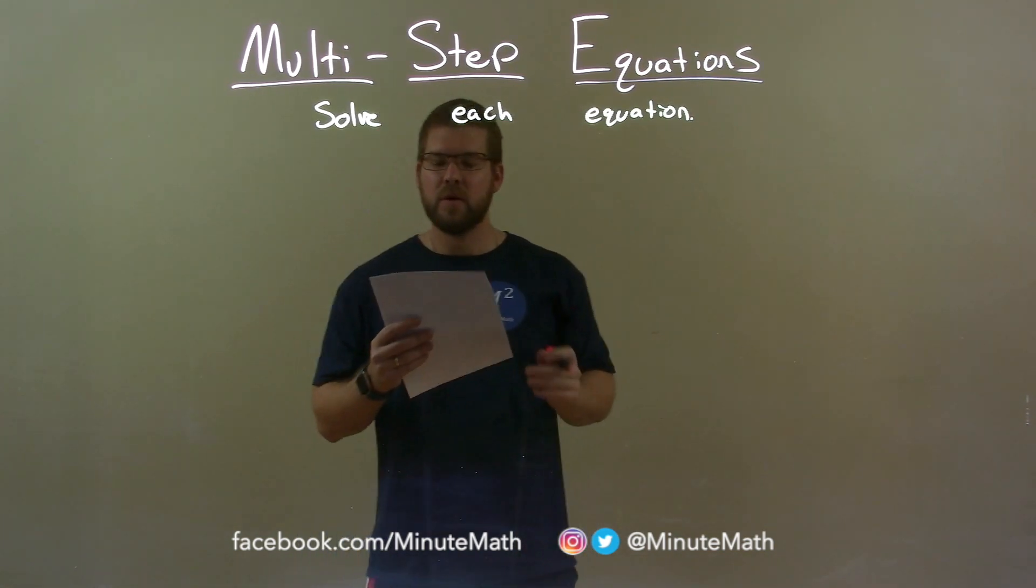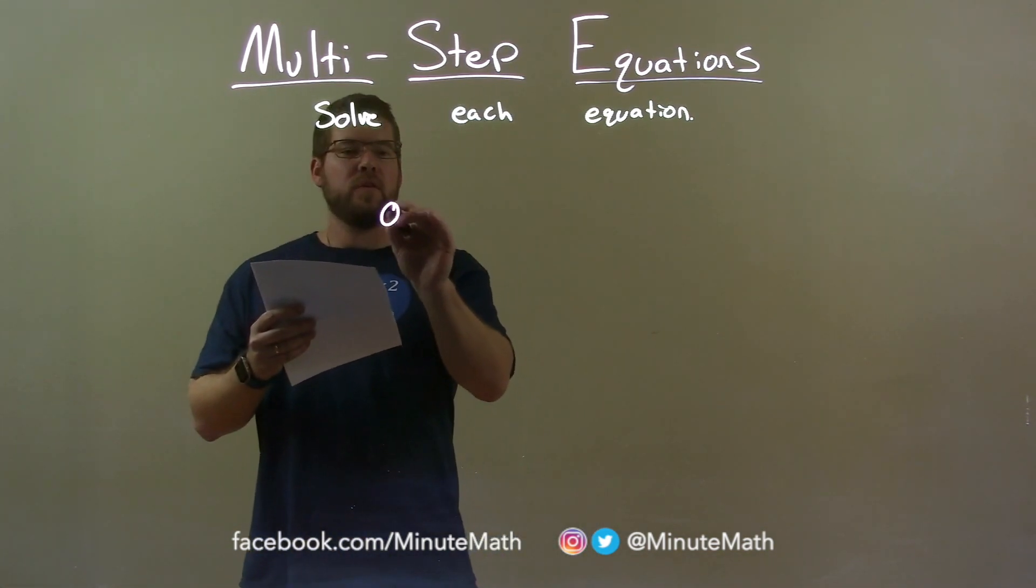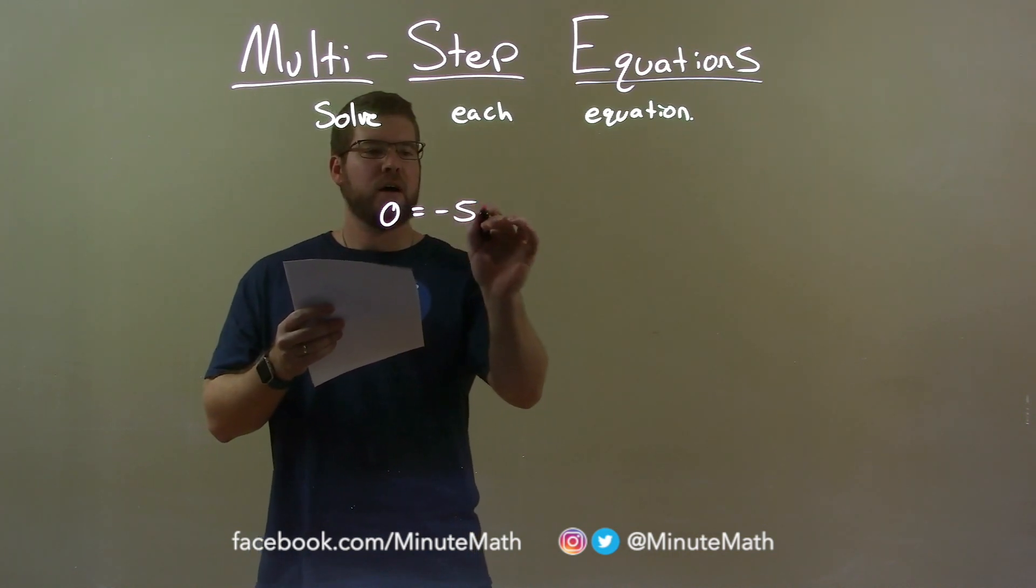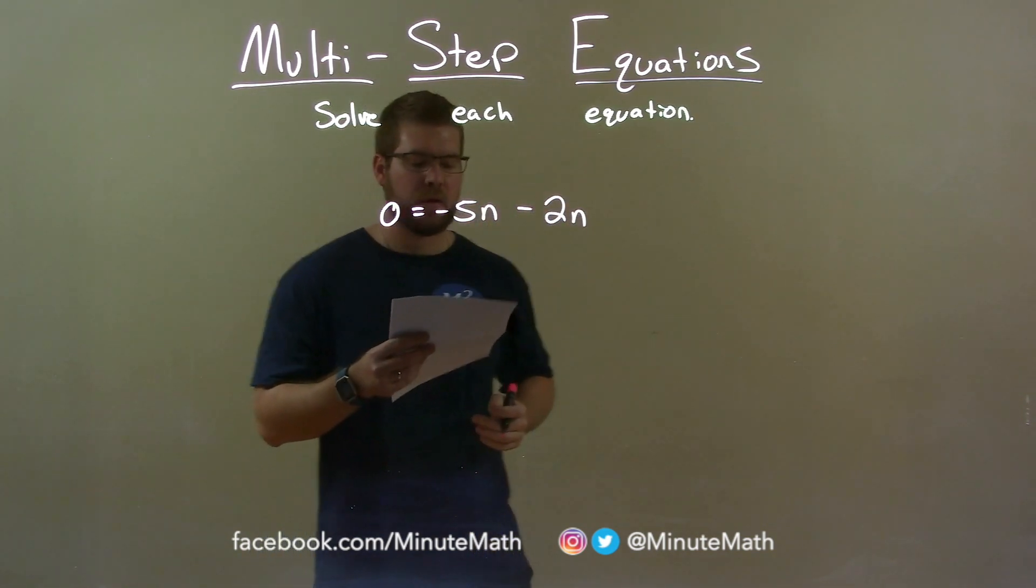Now, if I was given this equation: 0 equals negative 5n minus 2n.